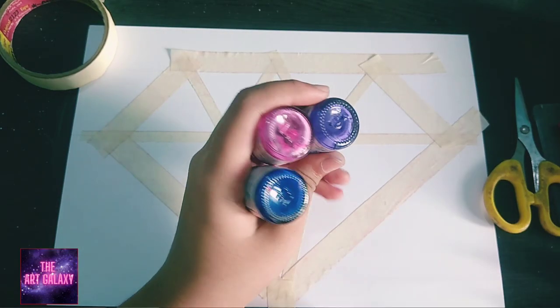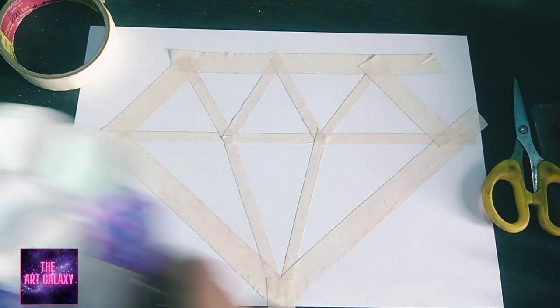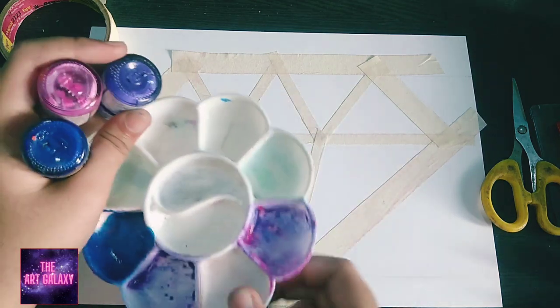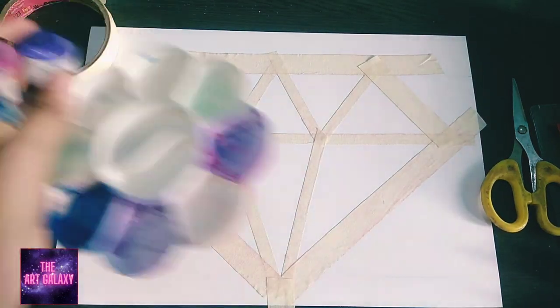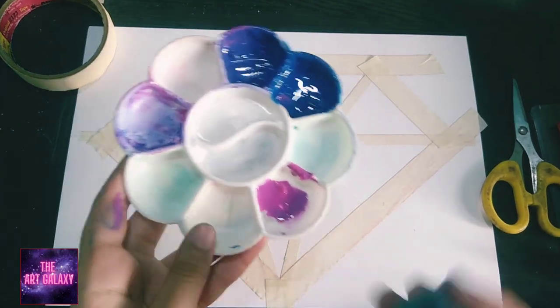So let's start painting. Now we need three colors: blue, pink, and purple. We have to pour these colors in the coloring palette, so it would be easier for us to color this by using a sponge. Make sure your sponge is quite moist.